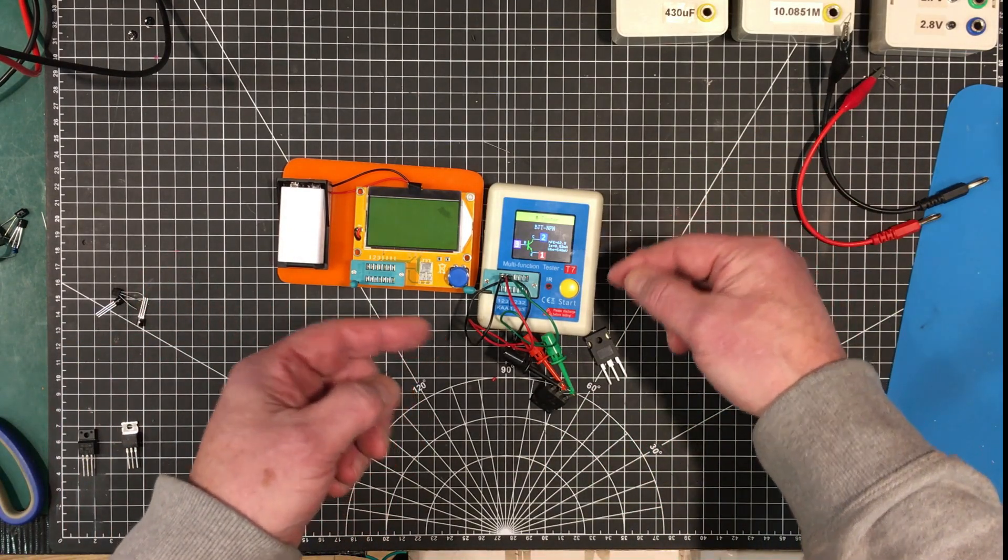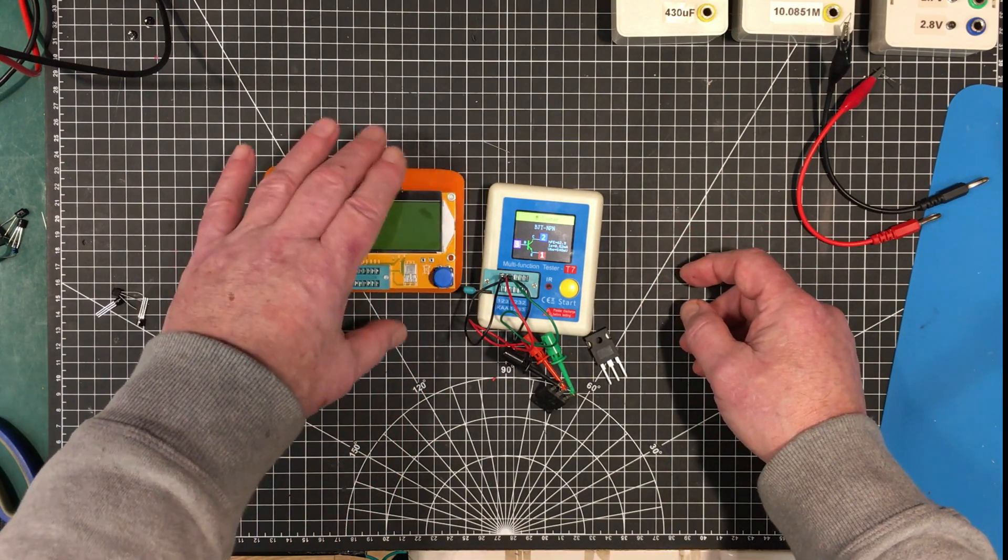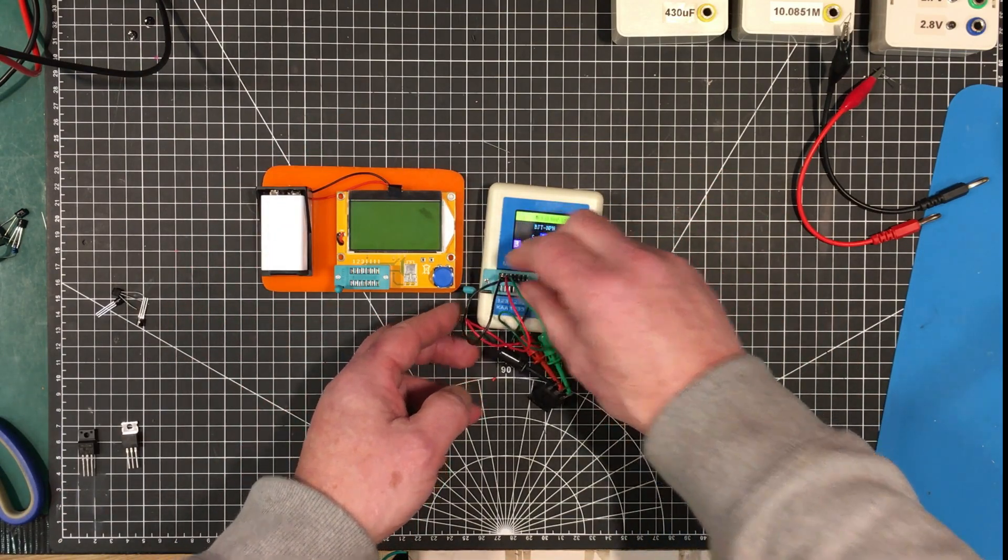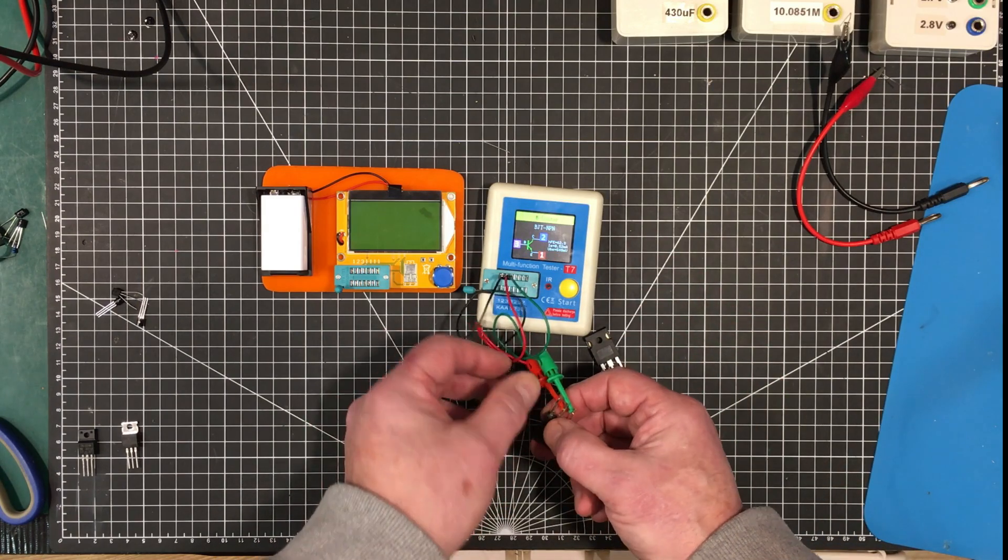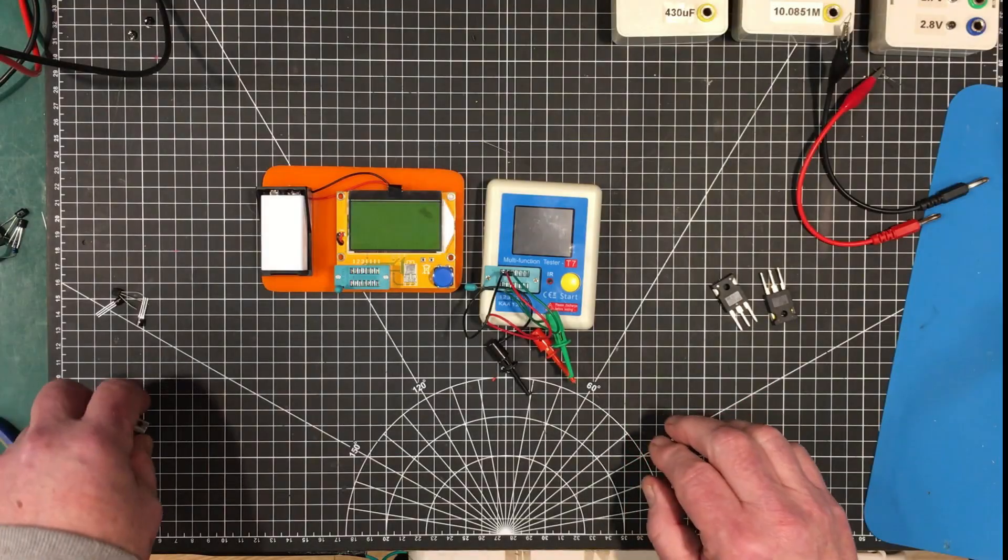Gain of 62. It's giving me a collector current of 0.52 milliamps and a VBE of 543 millivolts. Again, we don't know the complete parameters under which this one is testing. This gives us a little bit more information as to how it's testing this device. So it's definitely a plus.